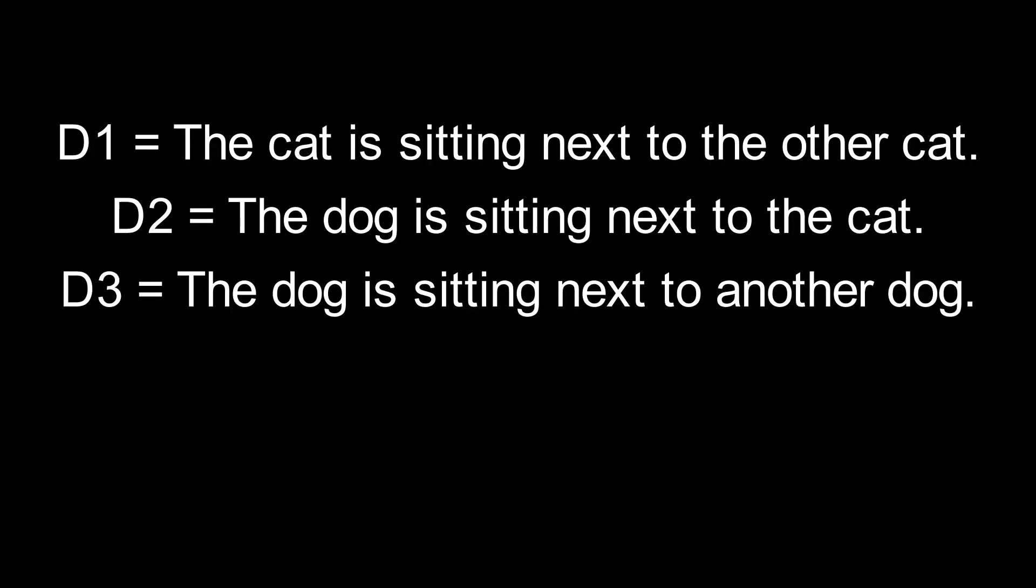Let's say Document 1 is the sentence, the cat is sitting next to the other cat. Document 2 is the sentence, the dog is sitting next to the cat. And Document 3 is the sentence, the dog is sitting next to another dog. And the term is cat.